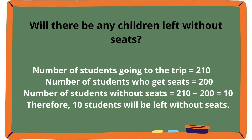Will there be any children left without seats? Let's find out. Number of students going on the trip is 210. Number of students who got seats is 200. Number of students without seats is equal to 210 minus 200, which is equal to 10. Therefore, 10 students will be left without seats.